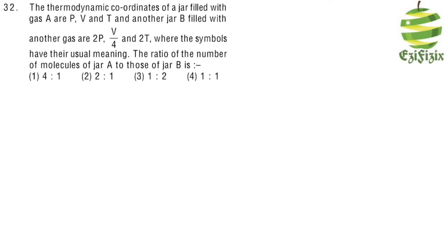For the ratio of jar A to jar B, we use PV equals N times kB times T, where N is the number of molecules. For gas A, we have P times V equals NA times kB times T.